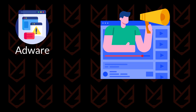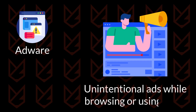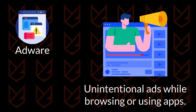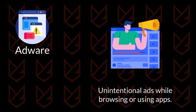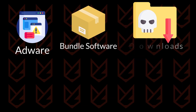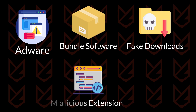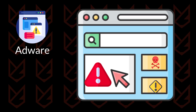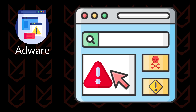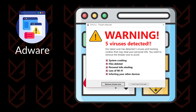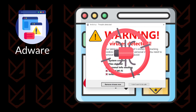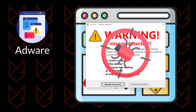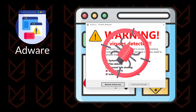Adware programs are malware that display unintentional ads while browsing the internet or using some apps. Adware gets infiltrated into the system mainly through bundled software, fake downloads, infected browser add-ons, redirections to an infected website, and more. It takes control of the browser to display unwanted ads to users. Most of these ads are malicious and clicking on them might trigger malware installation. Usually, users don't even notice it, and it keeps generating revenue for the cybercriminals.